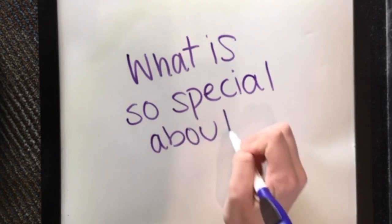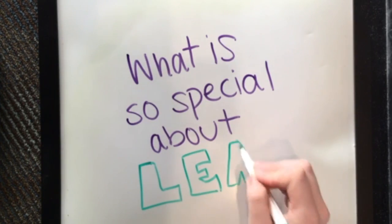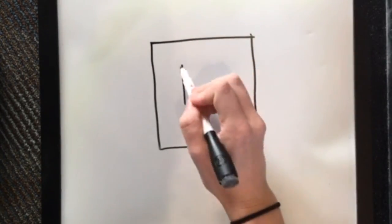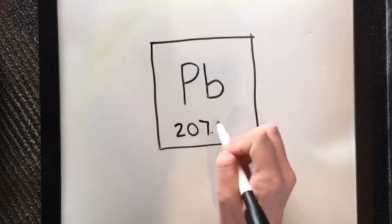So why is lead so effective in protecting us from these harmful effects? What's so special about it? Well, lead has a very high atomic mass of 207.2, which means it has lots of protons and lots of electrons.